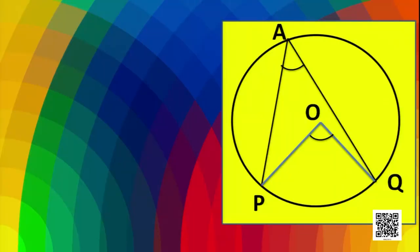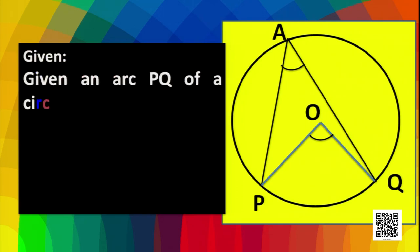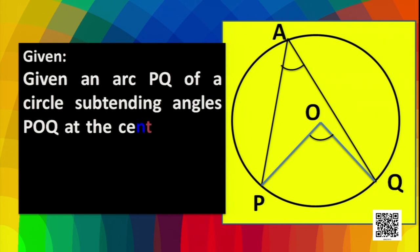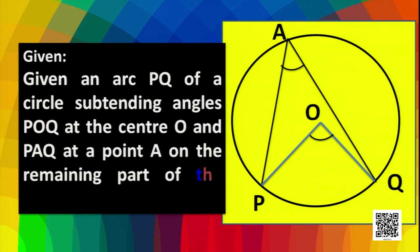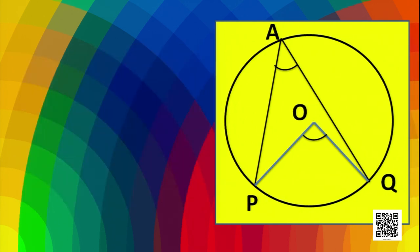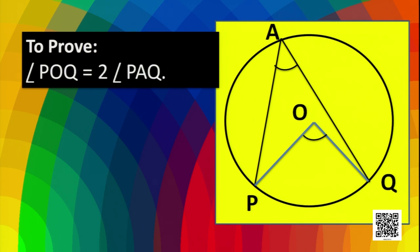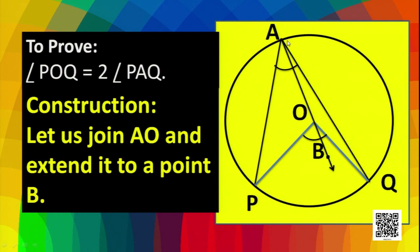In this case, we have PQ as the minor arc. What is given? The arc PQ of a circle subtends angle POQ at the center O and angle PAQ at a point A on the remaining part of the circle. What to prove? We have to show that angle POQ is twice the angle PAQ. To prove this, we need a construction: join AO and extend it to a point B.